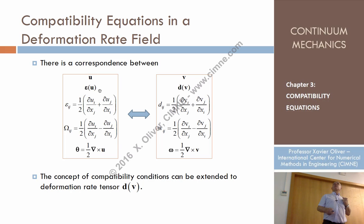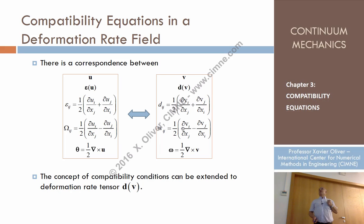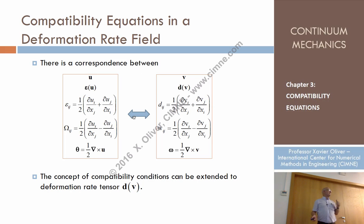Let's compare that with what we have for infinitesimal strains. Instead of displacements, now we have velocities. Instead of strains, now we have the rate of strains, which have the same expression. Then the strains in terms of displacements correspond to strain rates in terms of velocity. Also, we have the vorticity — the spin tensor — which has the same expression in terms of velocity as the rotation tensor had in terms of displacement. And finally, the vorticity vector omega has the same expression as the rotation tensor in terms of U. So there is a one-to-one correspondence between these vectors.